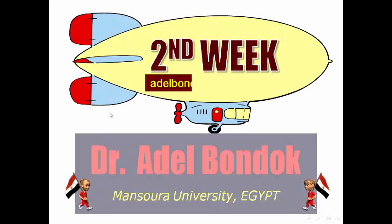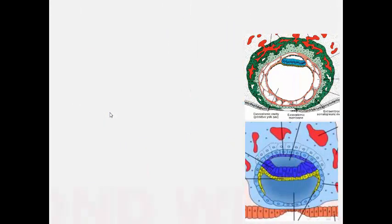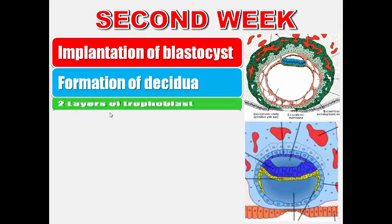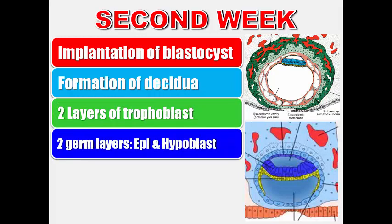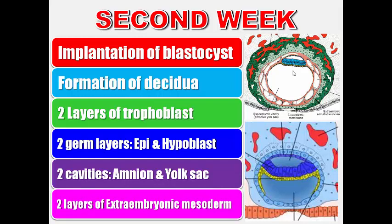Now we will talk about the changes in the second week of development. The second week is the week of twos. Number one: implantation of the blastocyst begins on day six and is completed on day eleven. After implantation, the endometrium is called decidua. Then formation of two layers of the trophoblast, two germ layers of the inner cell mass — epiblast and hypoblast — formation of two cavities — amniotic cavity and yolk sac cavity — and formation of extra-embryonic mesoderm with its two layers, somatic and splanchnic, or parietal and visceral.